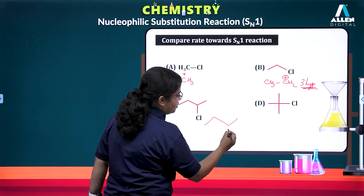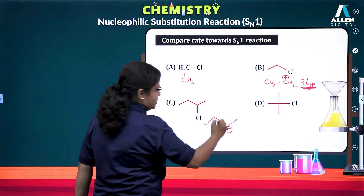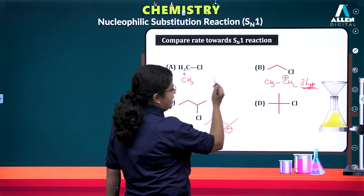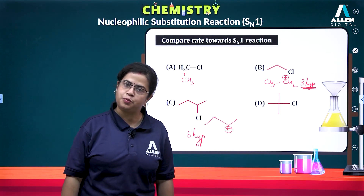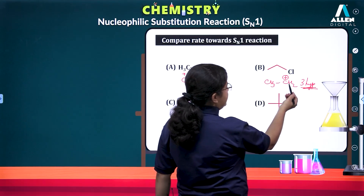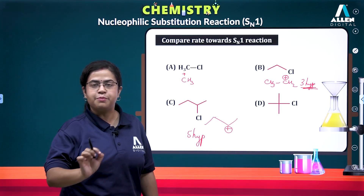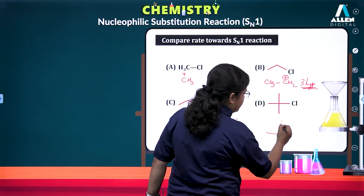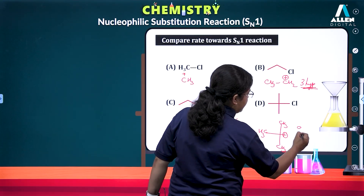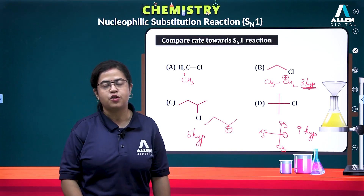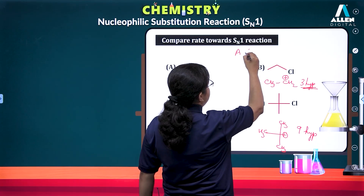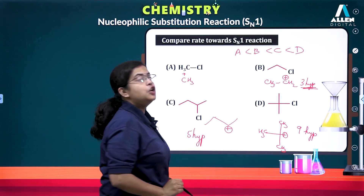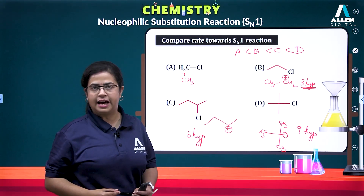Removing Cl⁻ from the 2° halide gives a carbocation with five hyperconjugating structures. No carbocation rearrangement is possible in any of the options. For the 3° halide (with three CH₃ groups), there are nine hyperconjugating structures, and hyperconjugation is a stronger stabilizing effect than the +I effect. Therefore, on the basis of carbocation stability, the correct increasing order of SN1 reaction rate is: CH₃Cl < C₂H₅Cl < 2° < 3°. Thank you everyone.